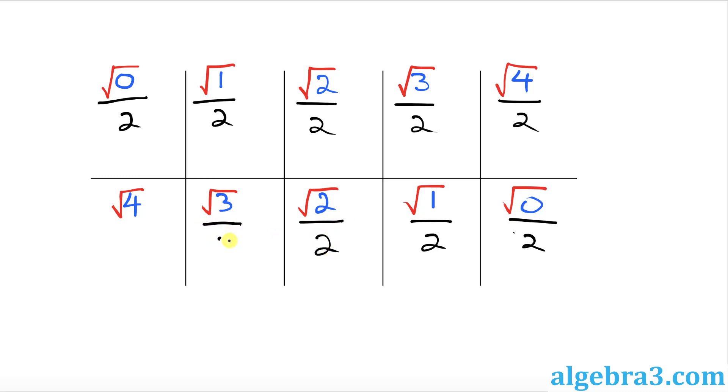Once we have taken care of this, the next step is to simplify these fractions. On the top, the numerator is square root of 0, which is simply 0. 0 divided by 2 is always 0, so this fraction simplifies to 0.